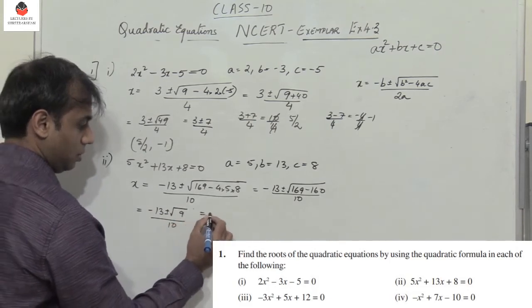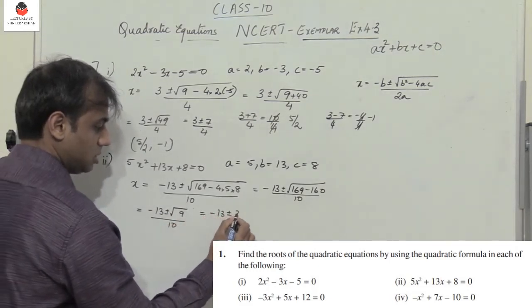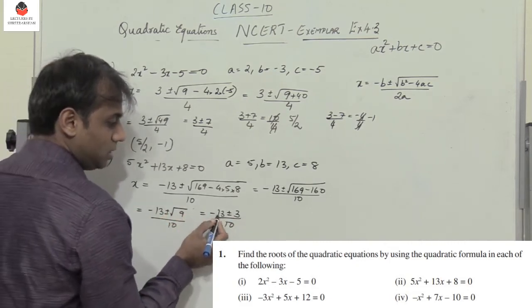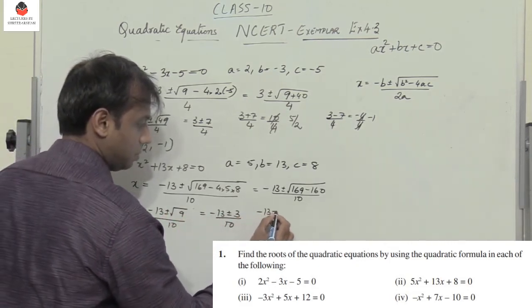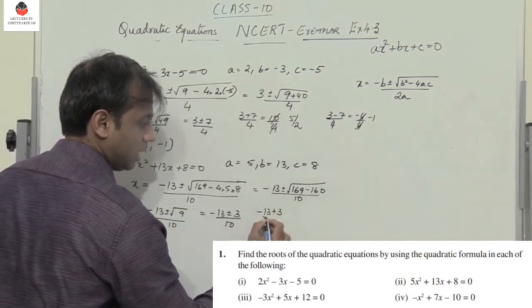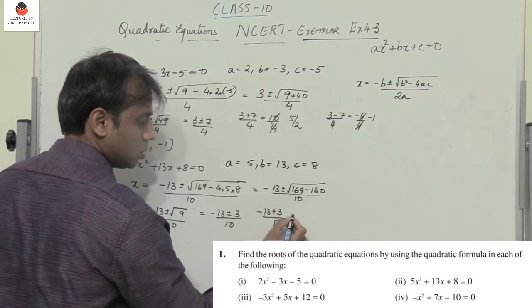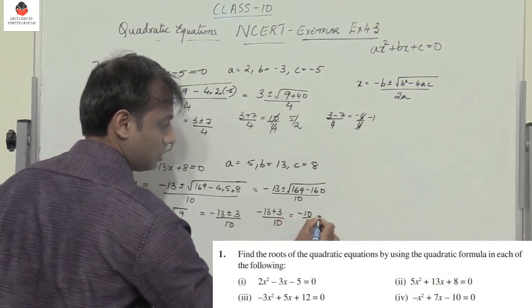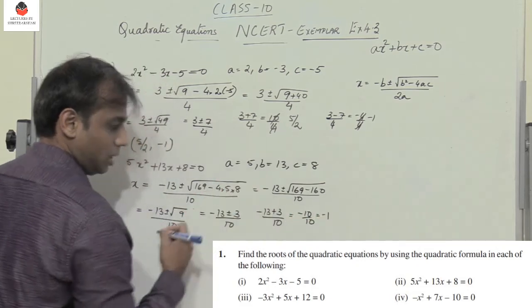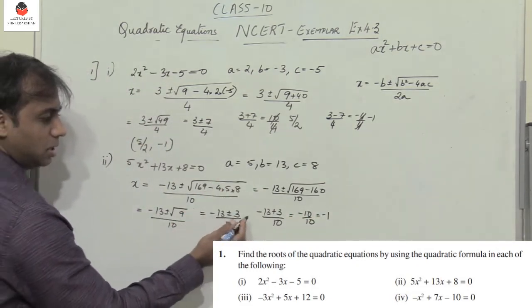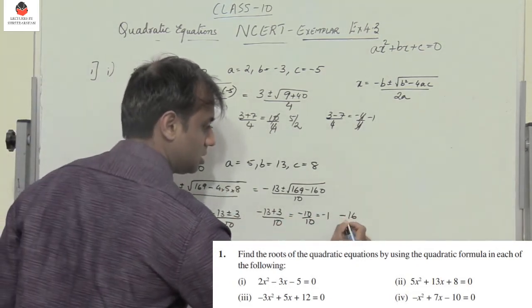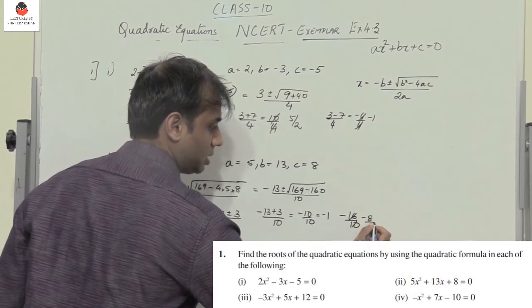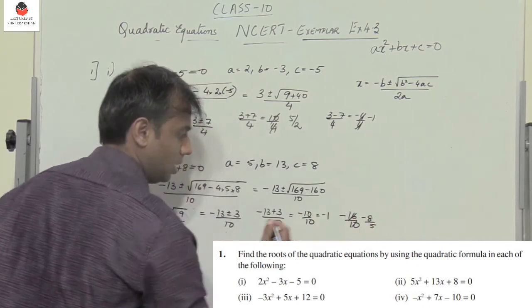We get minus 13 plus or minus root 9 by 10, which is minus 13 plus or minus 3 by 10. So one value is minus 13 plus 3 by 10, giving minus 10 by 10 equals minus 1. The other value is minus 13 minus 3 by 10, giving minus 16 by 10 equals minus 8 by 5. The two roots are minus 1 and minus 8/5.